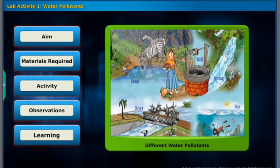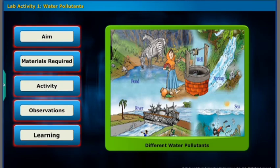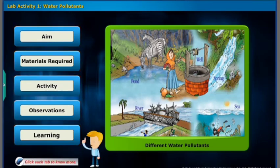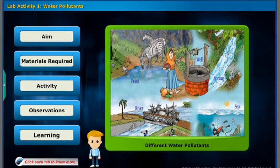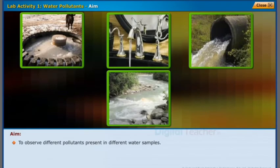Here let us perform an activity to observe the smell, color, and pH values of different water samples. Click each tab to know more. The aim is to observe different pollutants present in different water samples.